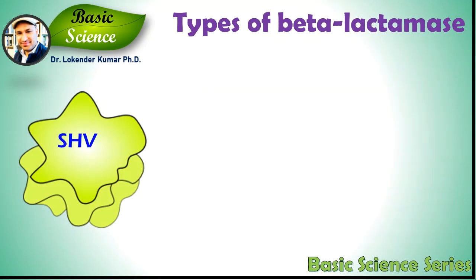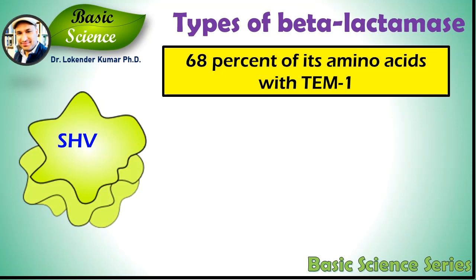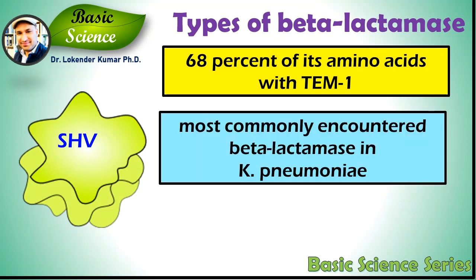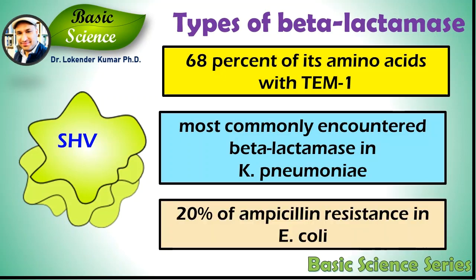SHV-1 shares 68% of its amino acids with TEM-1 and has a similar overall structure. The SHV-1 beta-lactamase is most commonly found in Klebsiella pneumoniae and is responsible for 20% of the plasmid-mediated ampicillin resistance.